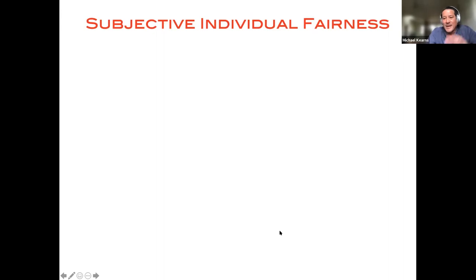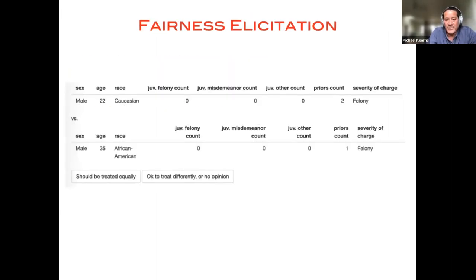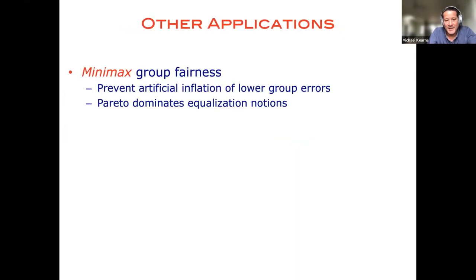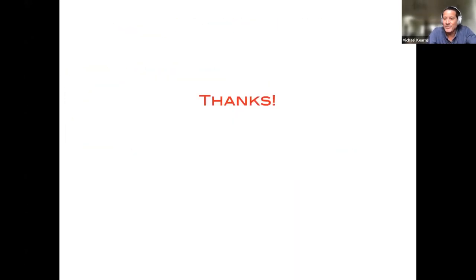Okay. And then there's a bunch of other examples that we've worked out, something that we call subjective individual fairness. And I wish I had time to talk about this because there's sort of an interesting kind of elicitation problem here where much like elicitation of utility functions, you're trying to elicit fairness notions from people. But let me stop there and take questions.